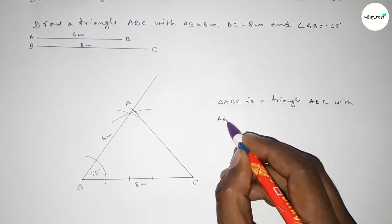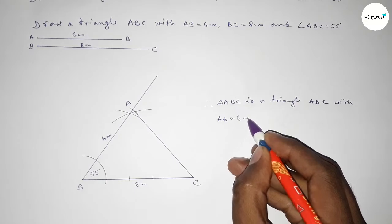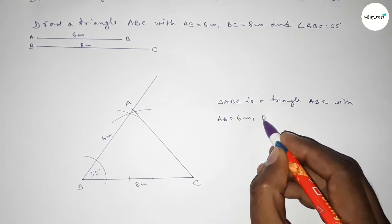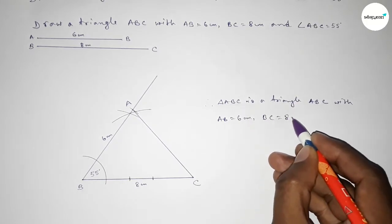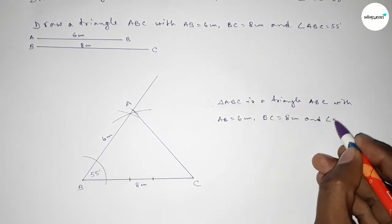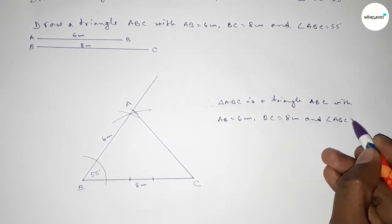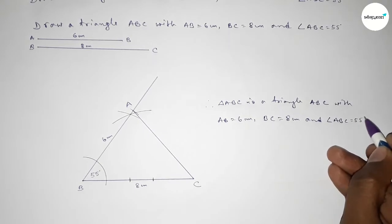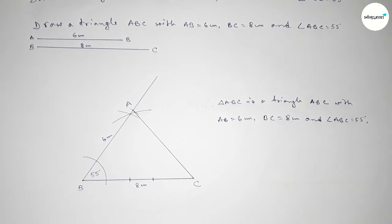Therefore triangle ABC is a triangle with AB equal to 6 centimeters, BC equal to 8 centimeters, and angle ABC equal to 55 degrees. That's all — thanks for watching. If this video is helpful to you, please share it with your friends.